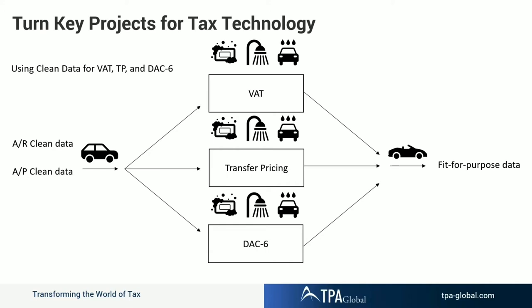The key turnkey point for tax and technology is using one single source of data for VAT, transfer pricing, and CbCR — all data considered fit for purpose. Instead of a siloed approach — extracting and cleaning data separately for VAT, transfer pricing, or CbCR — companies should aim to use the same data for all purposes, since most of the information overlaps. A siloed approach creates the risk of inconsistent data across different compliance obligations and results in double cleaning of the data.